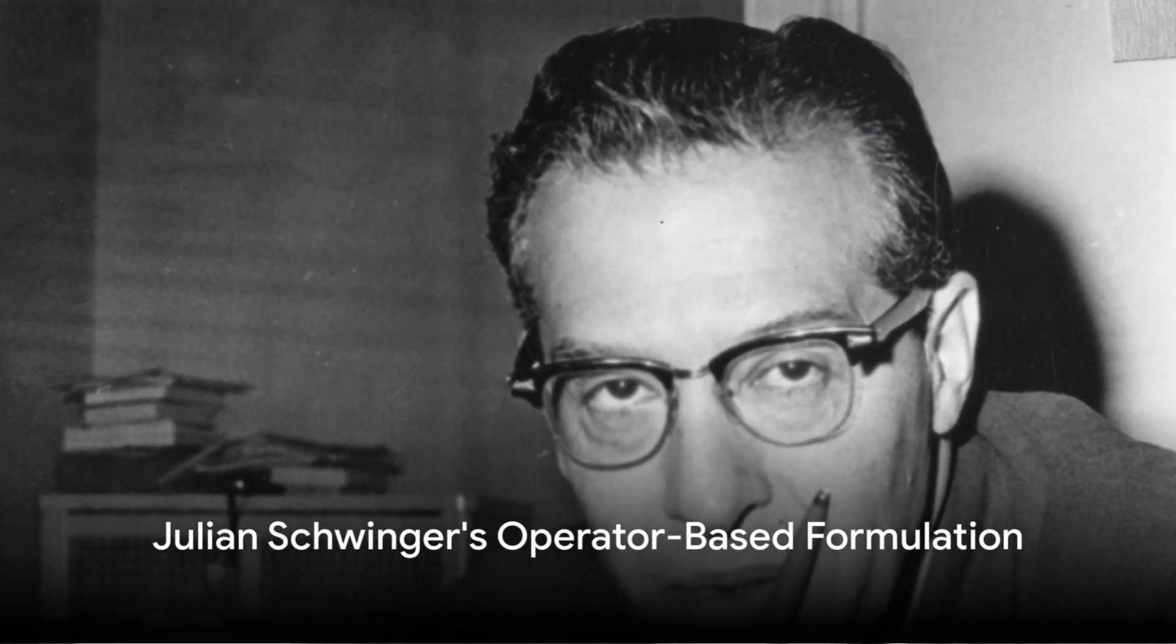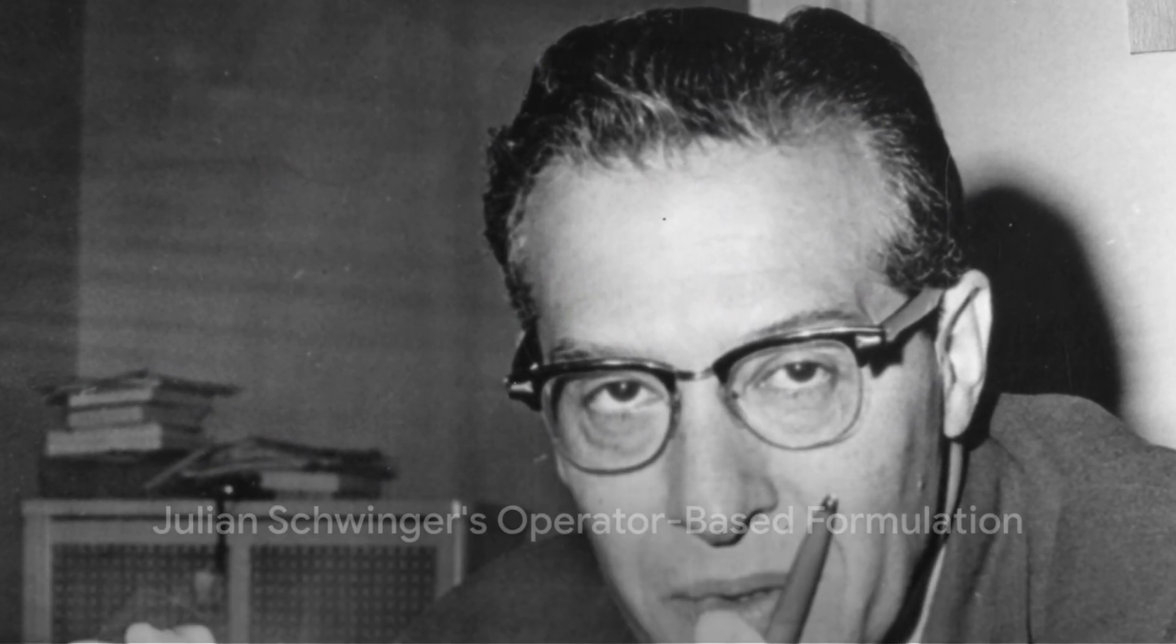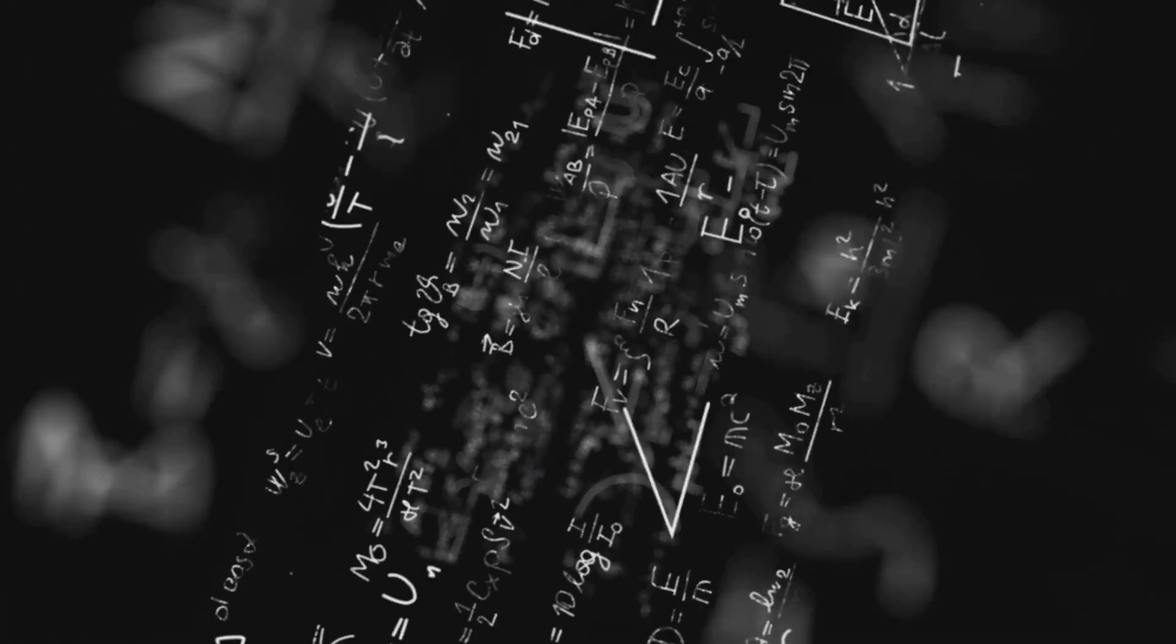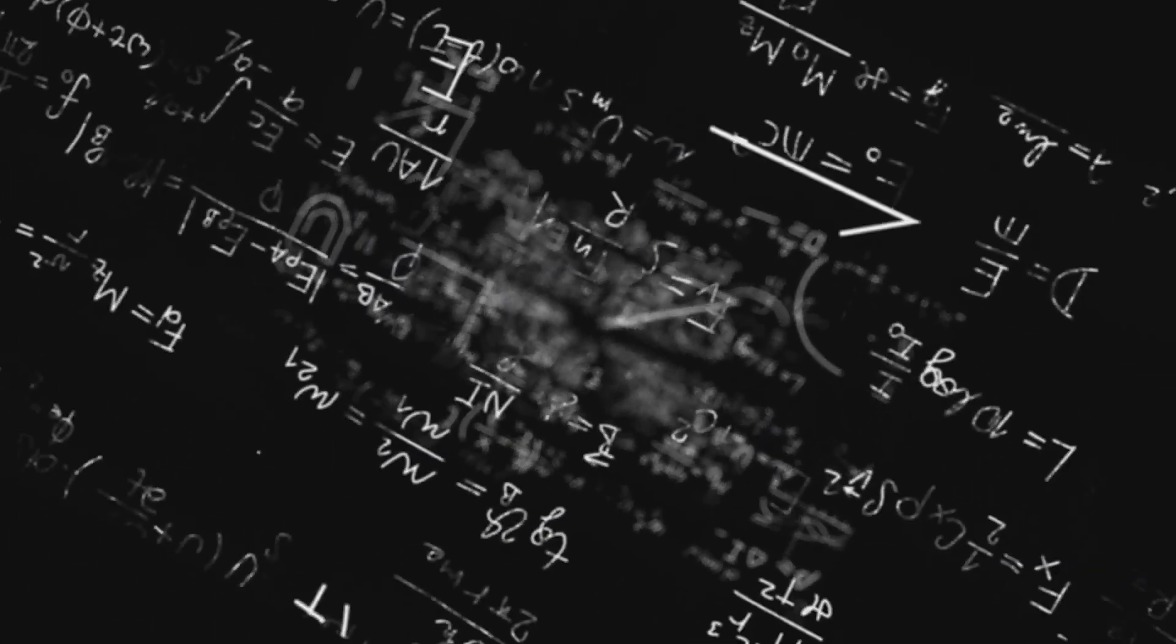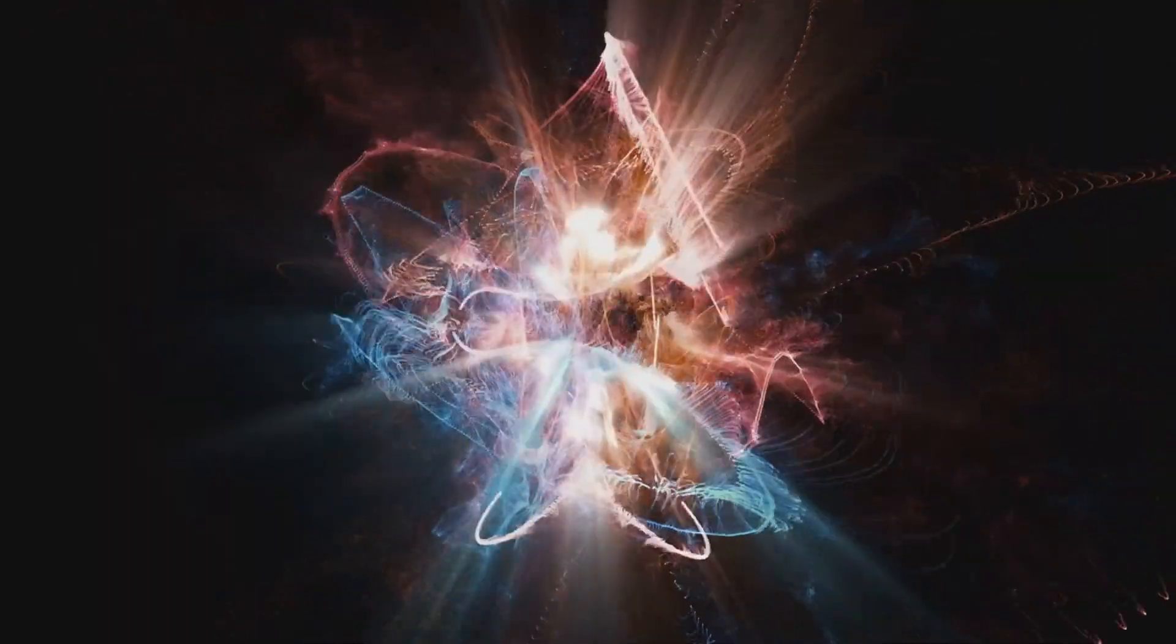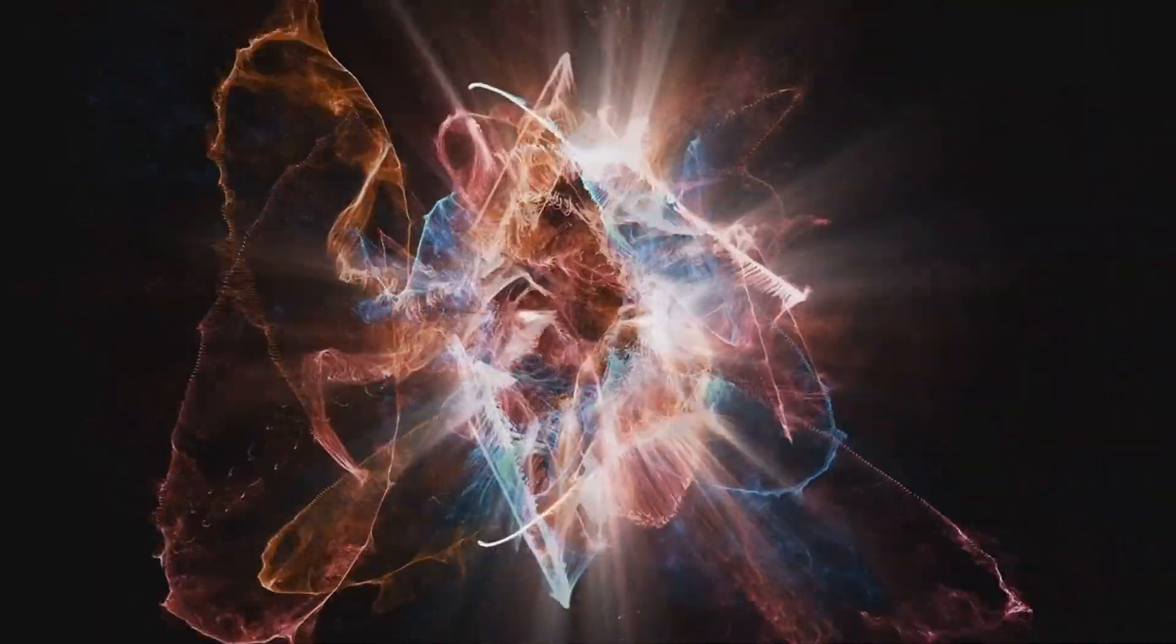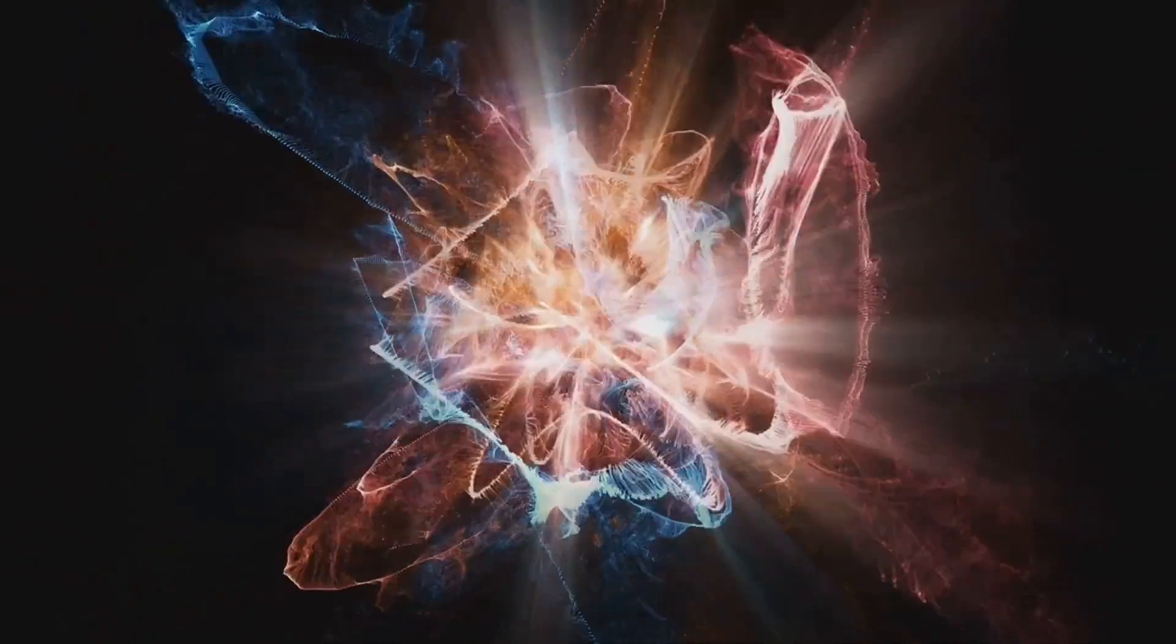At the same time, Julian Schwinger was hard at work crafting his operator based formulation of QED. Released to the world in 1948, Schwinger's work provided a meticulous mathematical foundation. It was an approach equivalent to Feynman's path integral method, but offered a different perspective, enriching our understanding of particle interactions.